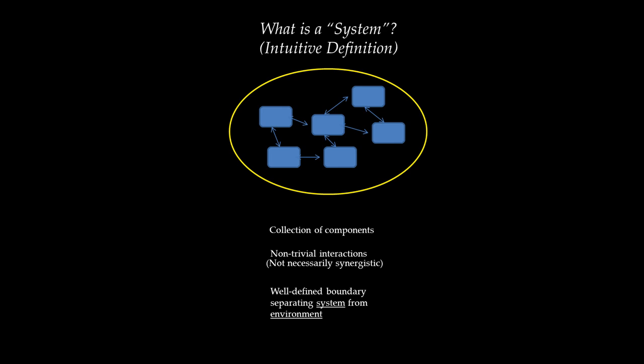There are two kinds of interactions the system can have with the environment. The environment can dictate certain inputs to the system — in control theory and dynamic systems theory we typically denote these inputs by u(t), where u can be a vector. The system can also exert influences on its environment, represented by outputs y(t). Intuitively, a system is a collection of components that interact in a non-trivial manner and have a well-defined boundary separating them from their environment.